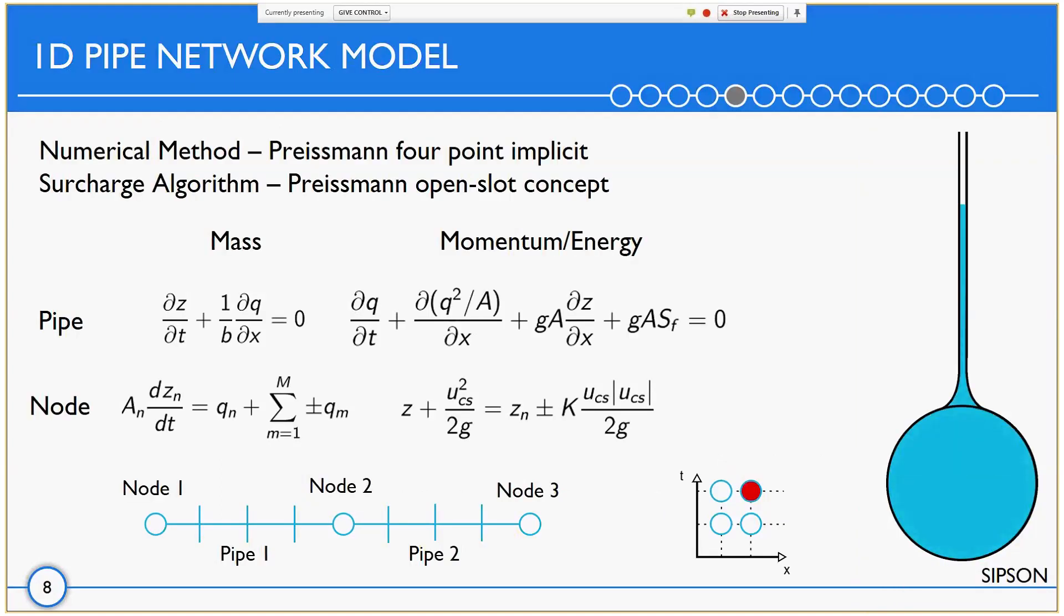On the simulations performed, we used the 1D model Sipson. Sipson is a 1D fully dynamic model that relies on the Saint-Venant equations to model the flow in the pipes and the mass and energy conservation equations in the nodes. It also makes use of the Preissmann box scheme to integrate the equations and relies on a subdivision of the pipes for improved accuracy of the flow inside the pipes. When the flow depth exceeds the crest of the pipe, the numerical model uses the Preissmann open-slot concept to simulate the pressurized flows. Since this method is completely implicit, it is unconditionally stable.